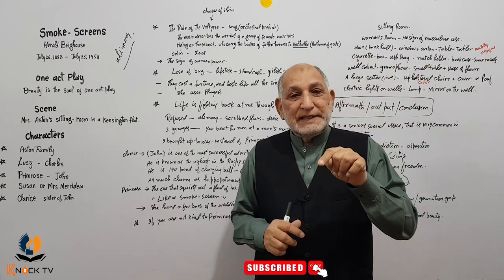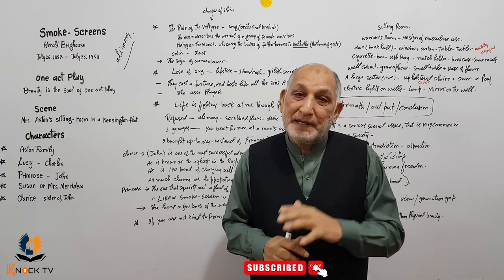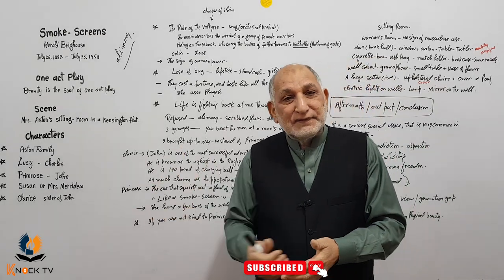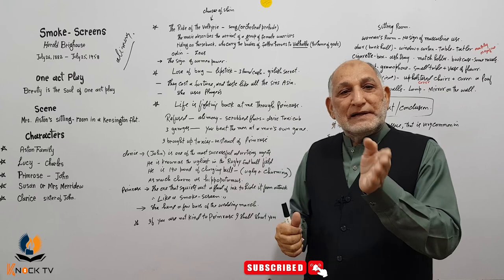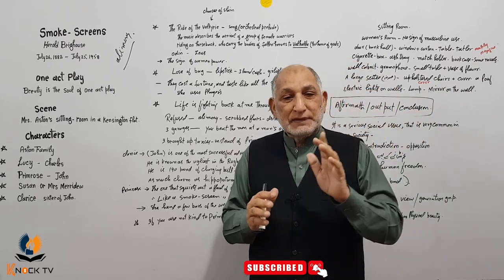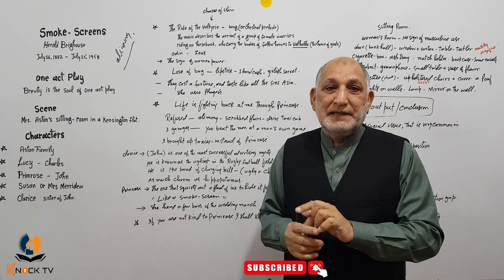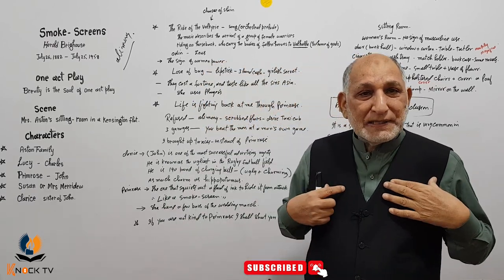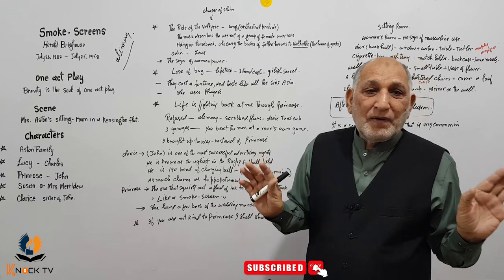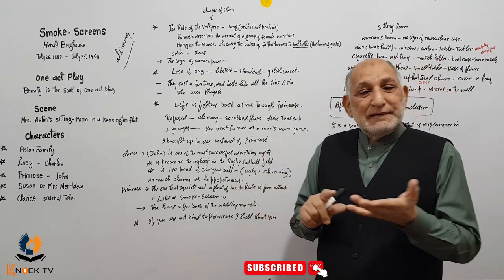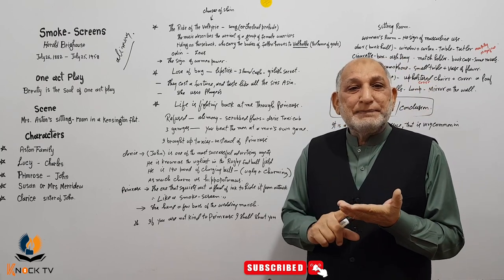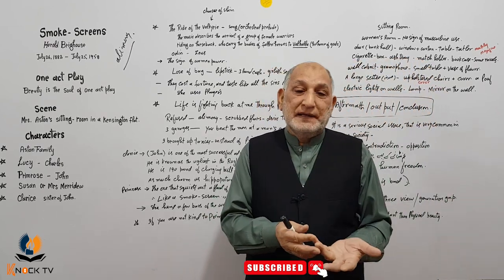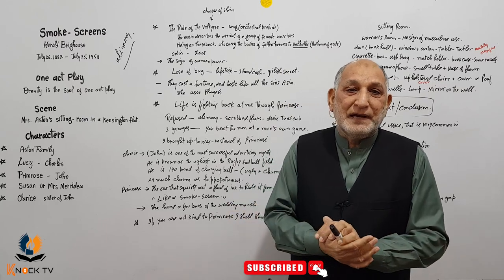حالانکہ Susan نے intentionally وہ purse چھپایا تھا، کیونکہ وہ رشتے کی بات کرنے آئی تھی اور چاہتی تھی کہ Primrose کے ساتھ بیٹھ کر پہلے convince کرے۔ اس society میں رشتے کے لیے لڑکی کو convince کرنا ضروری ہوتا ہے۔ Susan کہتی ہے بیٹھو، لیکن Primrose purse ڈھونڈنے لگتی ہے۔ Primrose کہتی ہے purse میں lipstick تھی، کچھ cash تھا، اور girlish secrets تھے — make-up وغیرہ۔